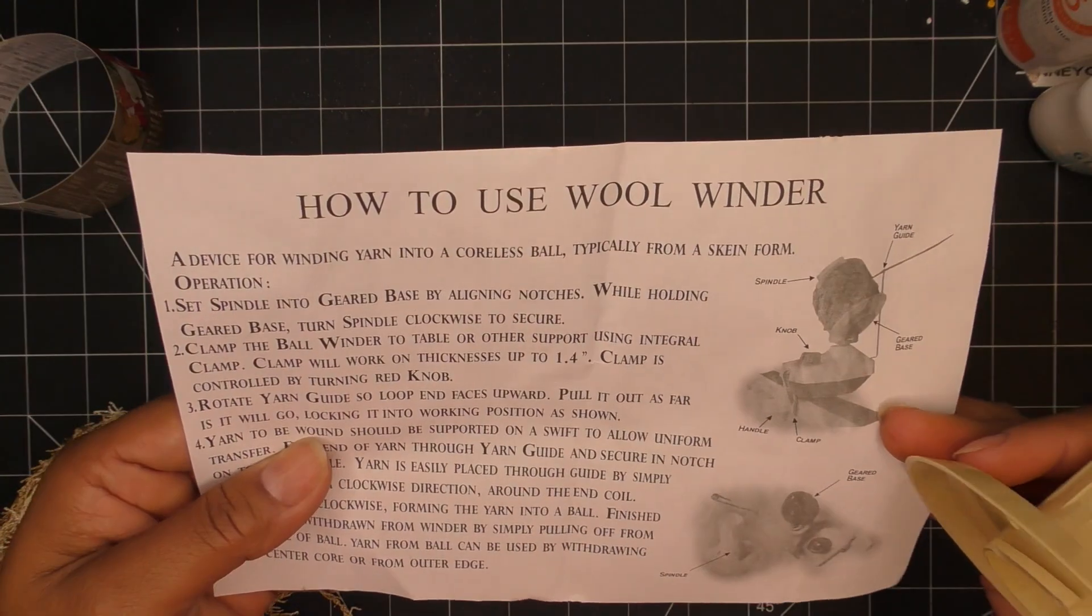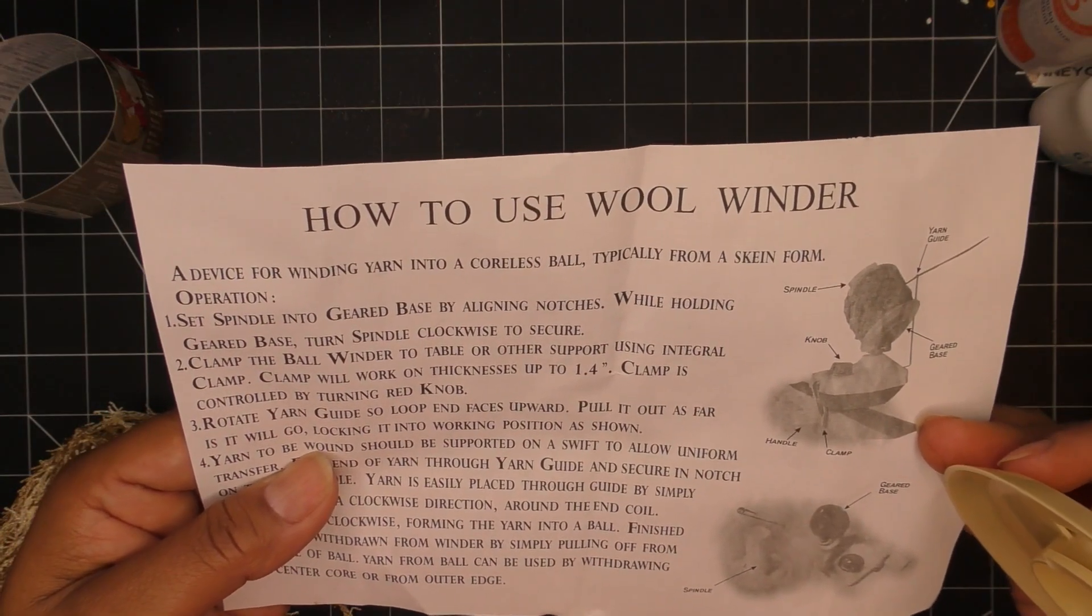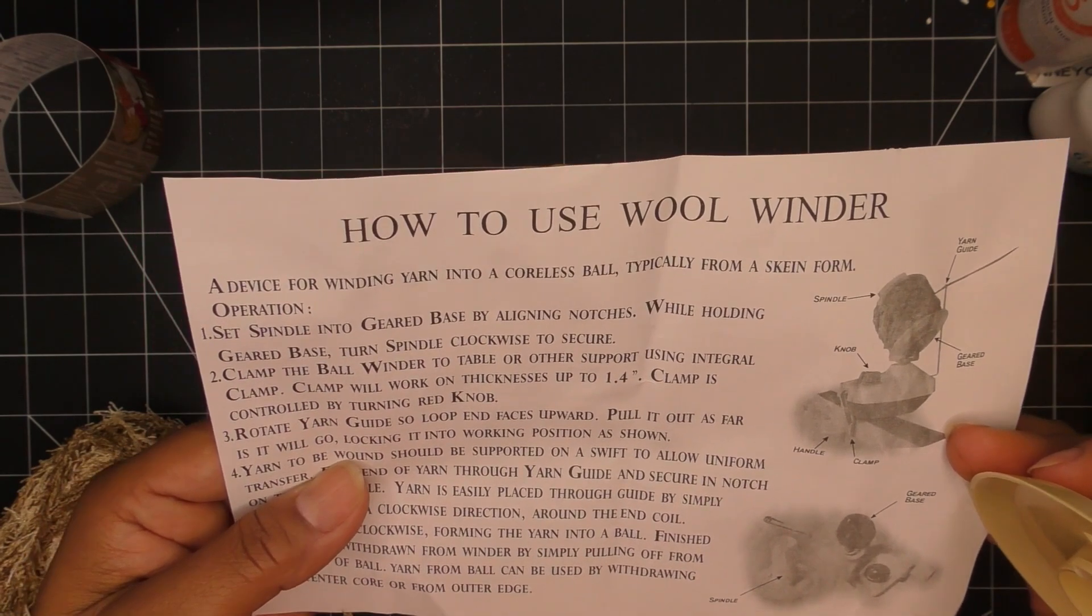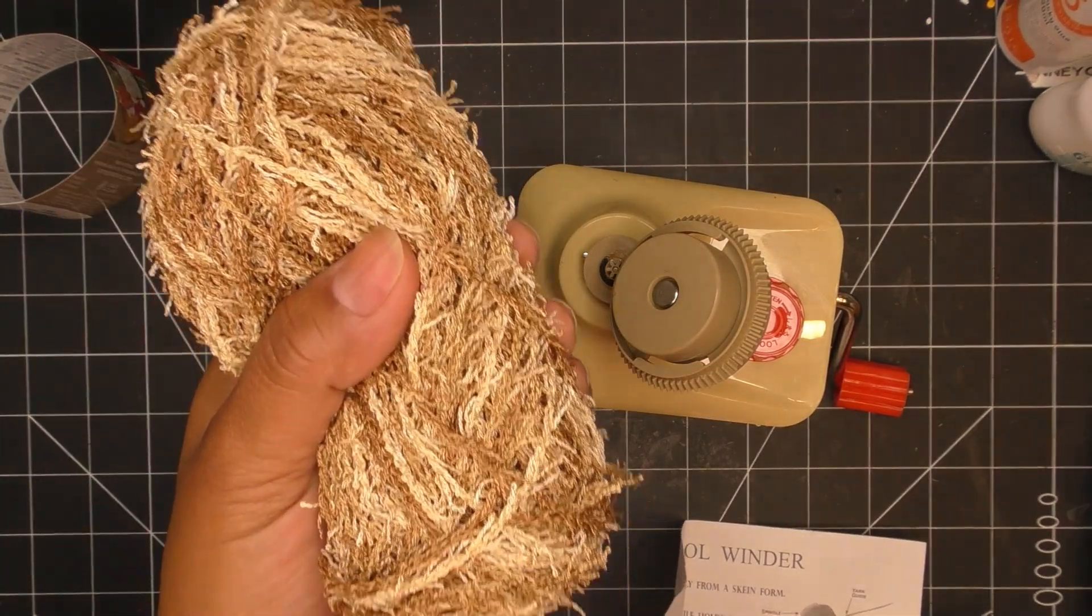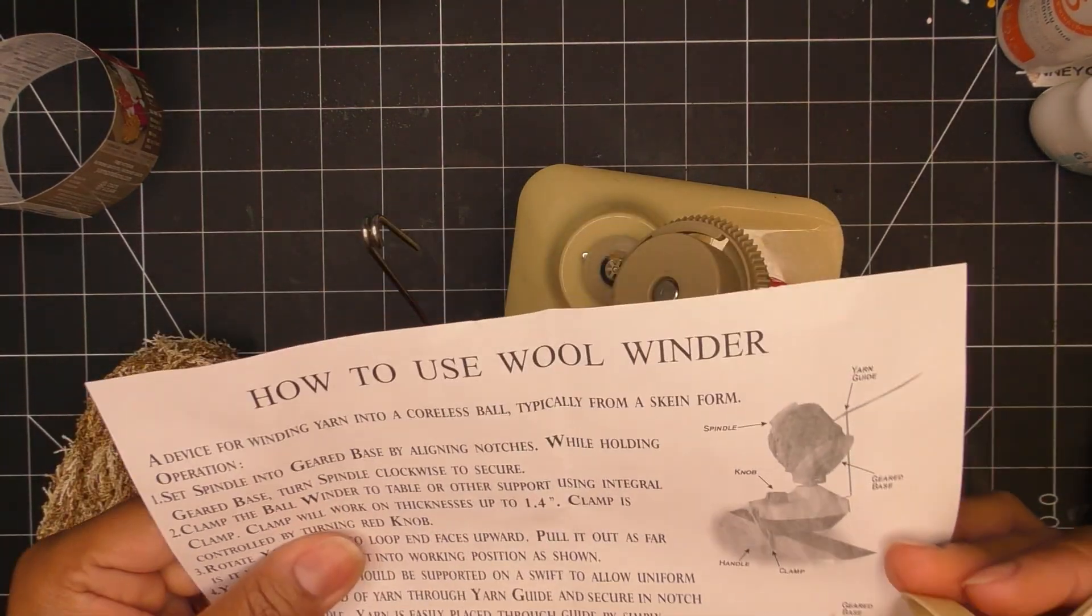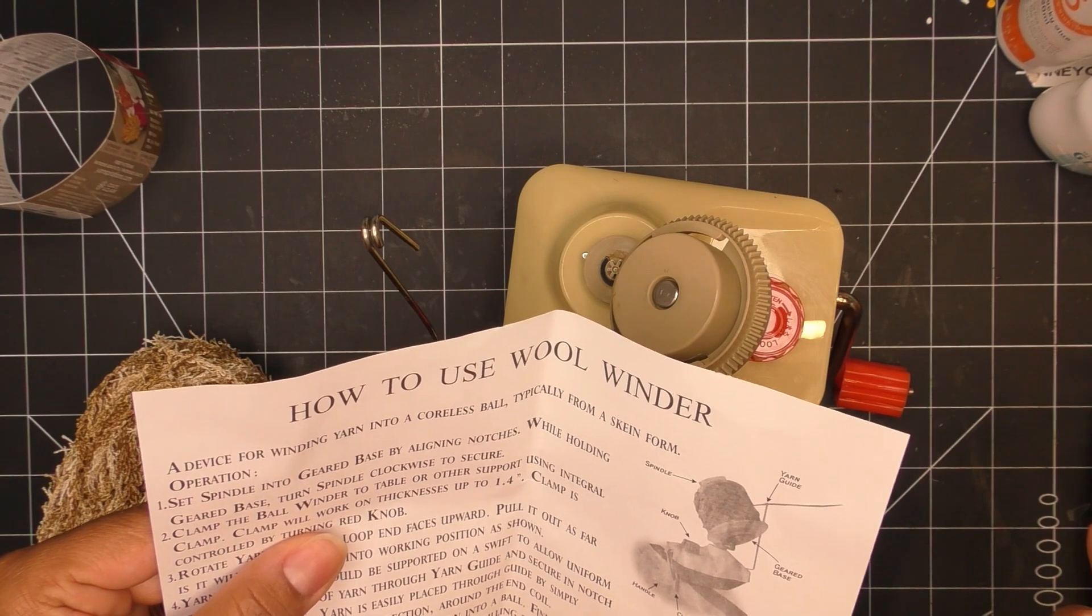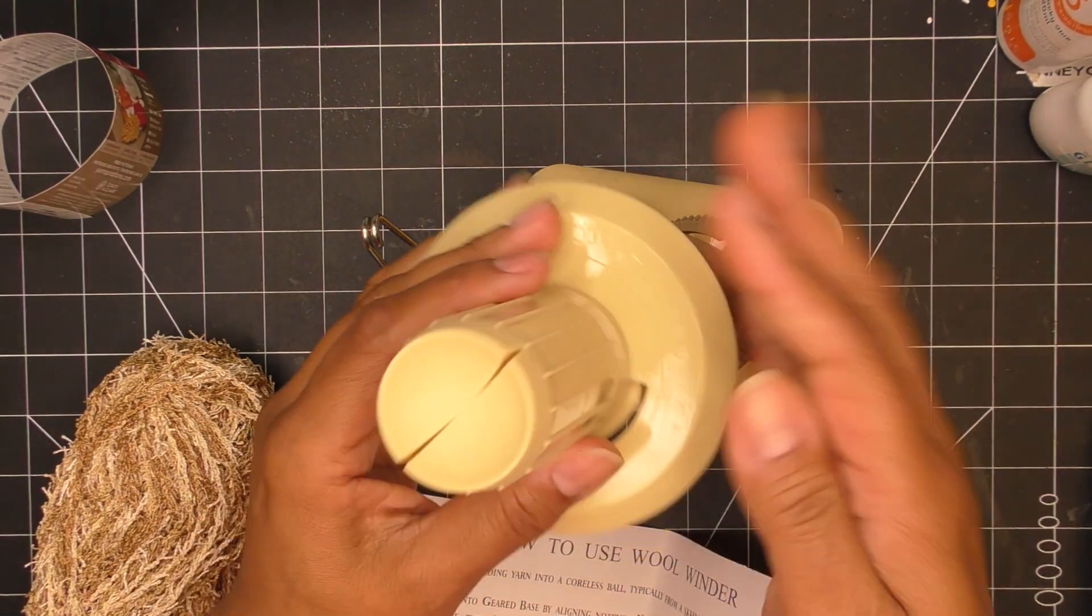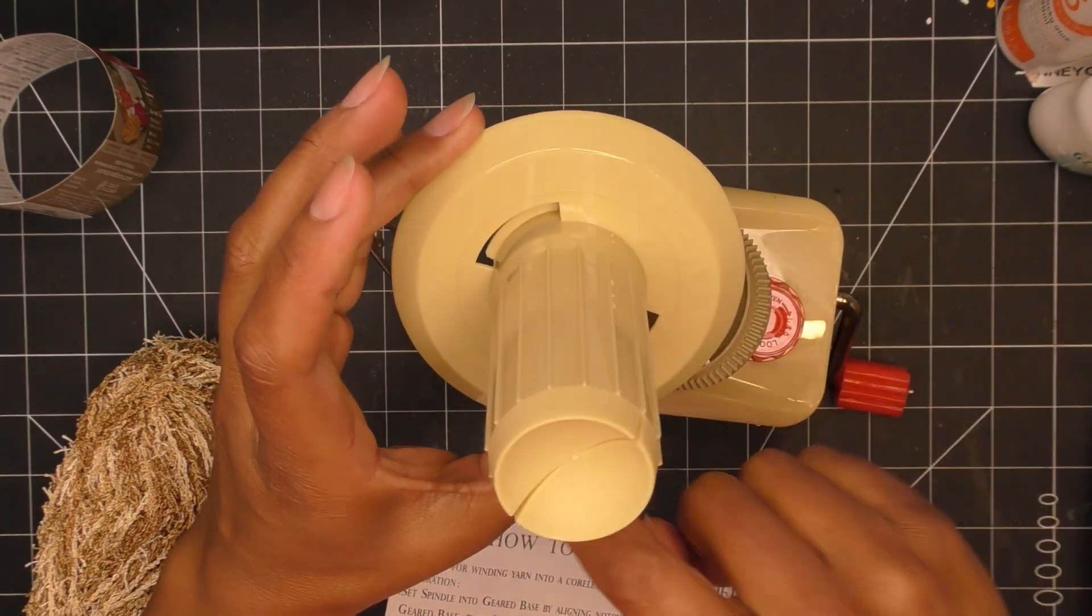Pretty cool device for winding yarn into a coreless ball, typically from a skein form. Skein is like this shape, and this one's gonna make a ball or a cake. Set spindle into geared base by lining notches. While holding gear base, turn spindle clockwise to secure.